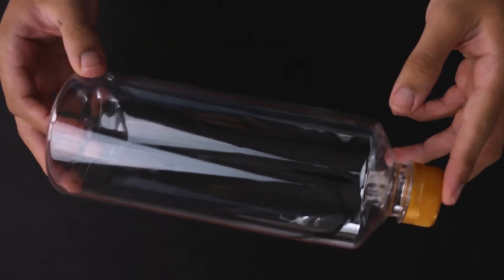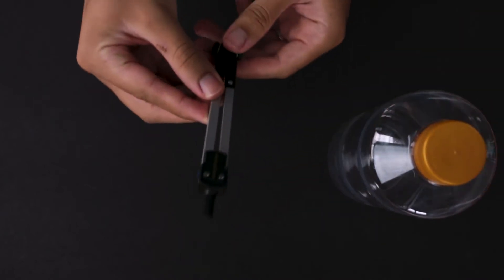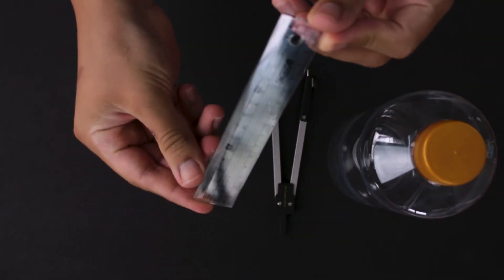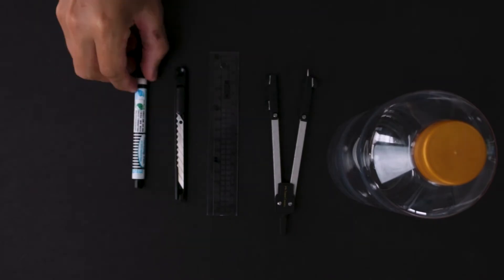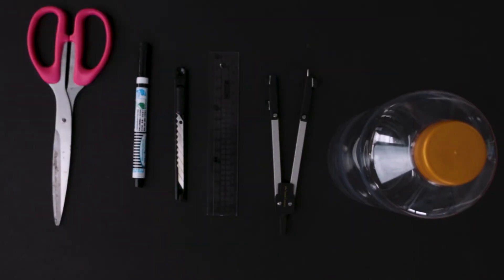For this project, we will need one clean and smooth plastic bottle, a compass, one small ruler, an art knife, a marker, scissors, and transparent tape.